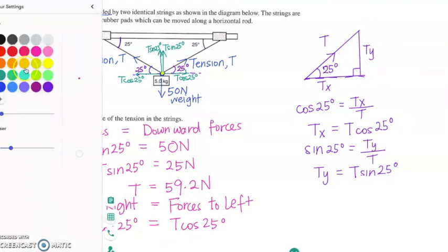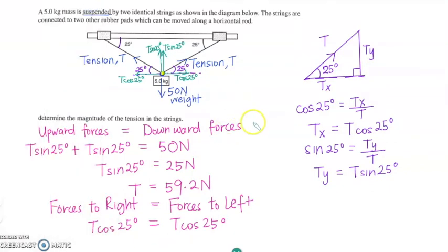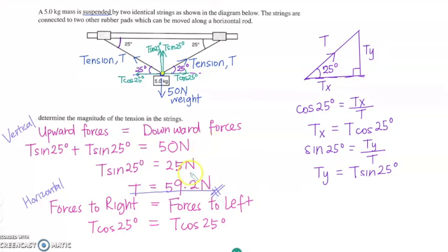What we are basically doing is summing the vertical parts of the forces first, and then looking at the horizontal. To find the tension, we only need the vertical, so 59.2 Newtons is our answer. We are splitting the tension into vertical and horizontal parts so we can solve the question by calculation without drawing a scale drawing. If you're not sure about resolving of forces, always come back to the right-angle triangle.